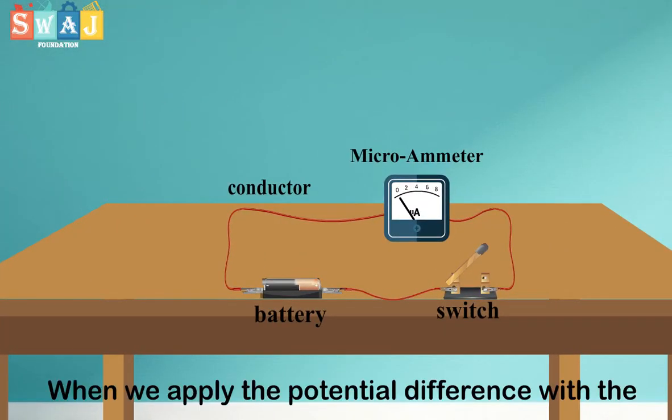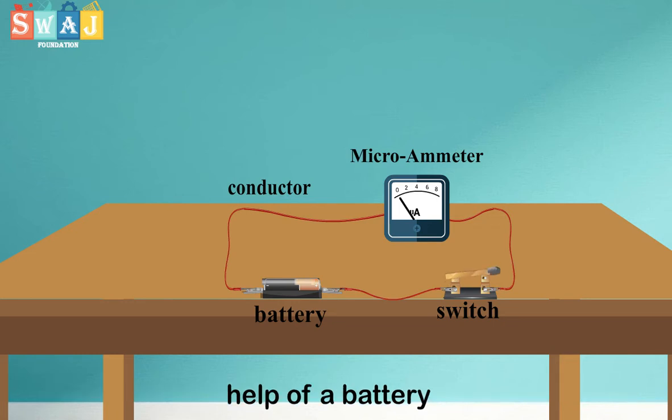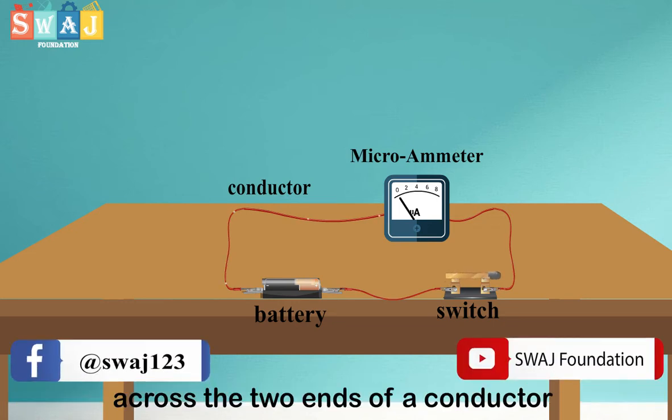Electric current. When we apply a potential difference with the help of a battery across the two ends of a conductor,